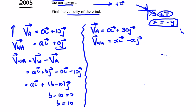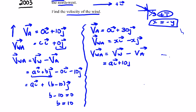Now let's write down the velocity of the wind relative to the woman for the second case: velocity of wind minus velocity of woman. The velocity of the wind is a in the i direction, b is 10 in the j direction. The velocity of the person is zero in the i direction minus 30 in the j direction. So the velocity of the wind relative to the person becomes a in the i direction and then 10 minus 30, which is minus 20 in the j direction.